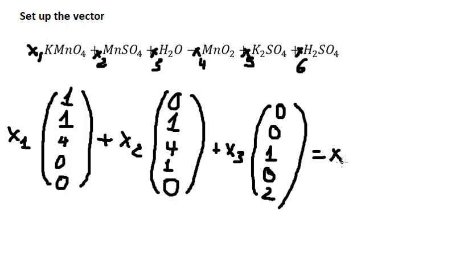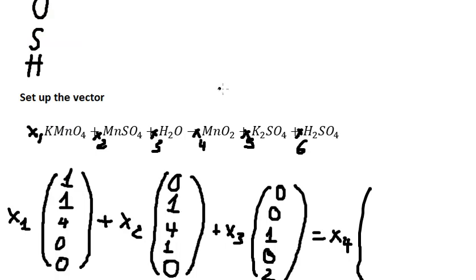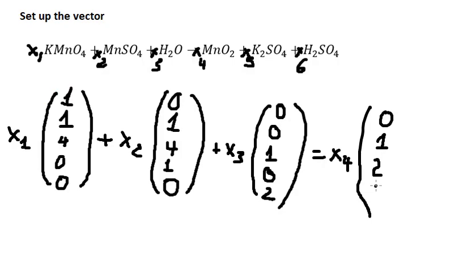For S4, we have zero K, one Mn, two oxygen, zero H, and zero hydrogen — so: 0, 1, 2, 0, 0.